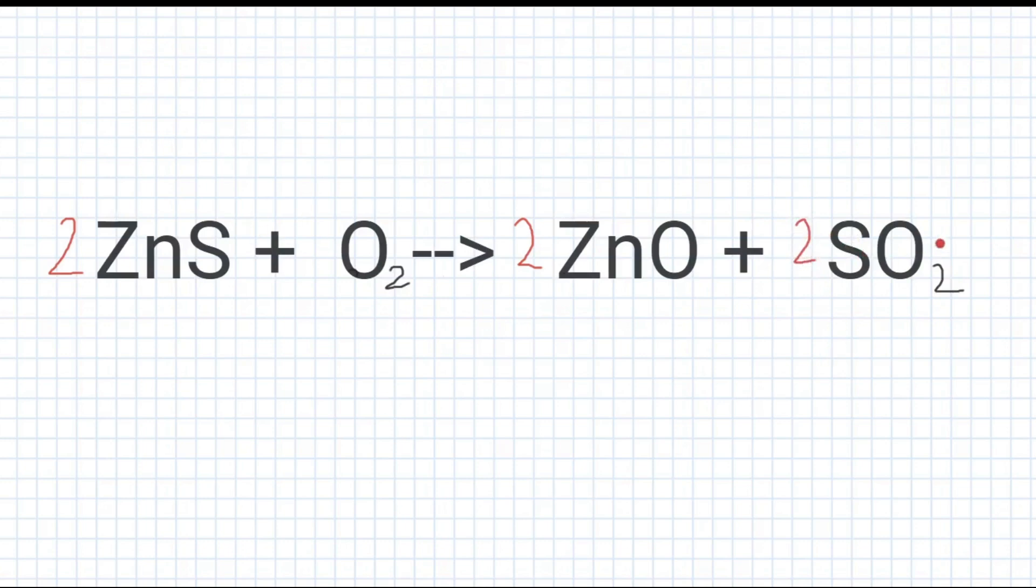And now since we did that, it's kind of balanced. Our sulfur and zinc are perfectly balanced. What's not balanced though is our oxygen, since there's two oxygen on this side and it seems now that there's six oxygen on this side.